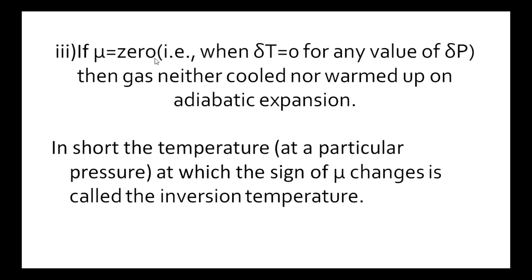Third condition: if mu is equal to zero — that is, when delta T is equal to zero for any value of delta P — then mu will be zero. Then that gas neither cools nor warms up on adiabatic expansion. In short, the temperature at which the sign of mu changes is called the inversion temperature. Below that inversion temperature, mu is positive, then that gas cools. Above that, mu is negative, then that gas is warmed up. When mu is equal to zero, the sign of mu changes at a particular temperature — that temperature is known as the inversion temperature.